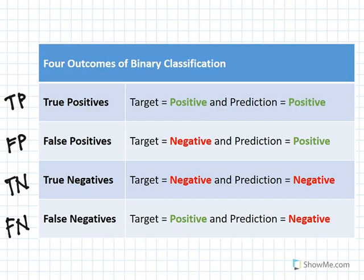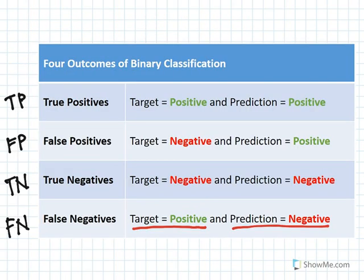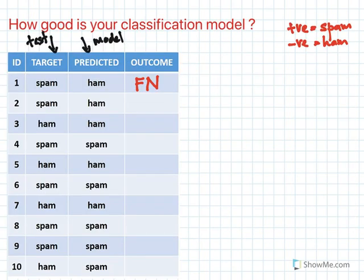Let's go back to our definition: false negative is when your target is positive and your model predicts it as negative. You might ask what is positive and what is negative here. Spam is positive and ham is negative. So when your target is spam but your model predicted ham, that is false negative. This one will also be false negative.